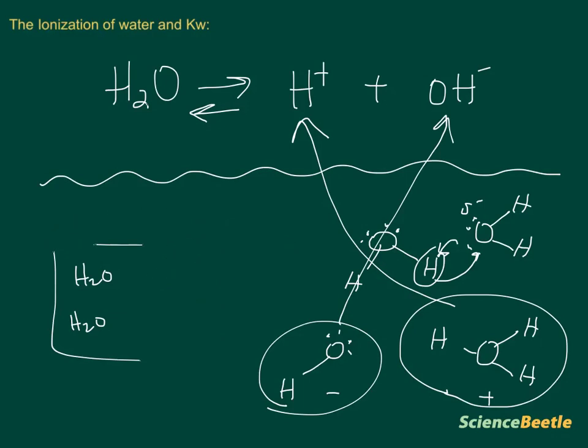The ionization constant essentially is an equation that allows us to look at the formation of ions in solution. And we generally represent that constant as Kw. And Kw is going to be equal to the concentration of the hydrogen ions multiplied by the concentration of the hydroxide ions.